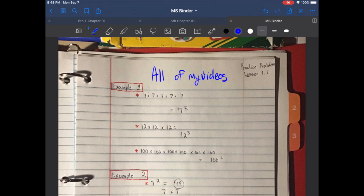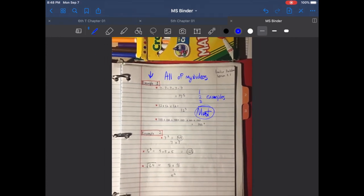So one, two, or three examples. These must be in your binder. Notice in this sixth grade lesson, I only have two examples and here they are.